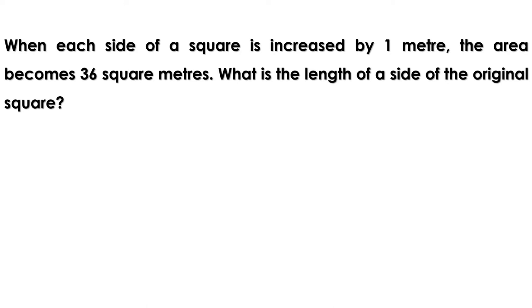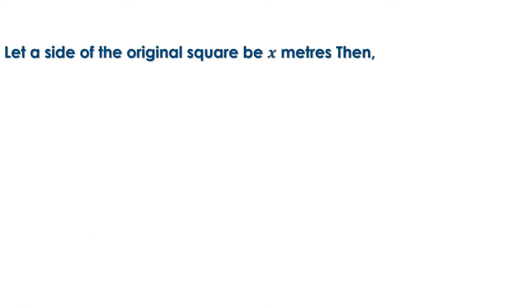Let us take the side of the original square as x. When it is increased by 1, the new side is x + 1. The area of a square is side squared, therefore (x + 1)² = 36. How can we find the value of x? The square of (x + 1) is 36, which is also a perfect square.